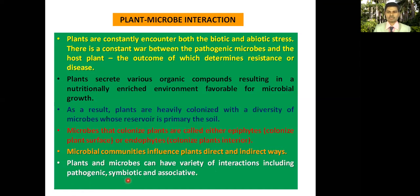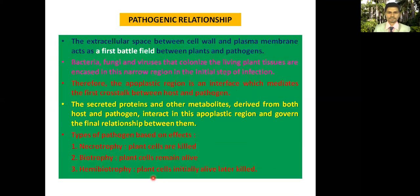In a symbiotic relationship, both partners get equal benefit from each other. Some microbes reside within plants — such as nitrogen-fixing bacteria which reside in root nodules and fix atmospheric nitrogen — and these microbes are therefore called symbiotic.